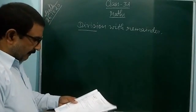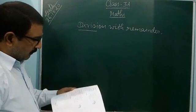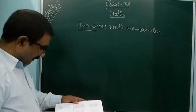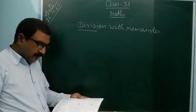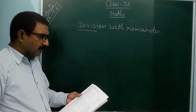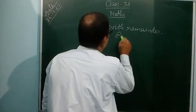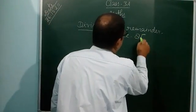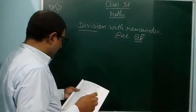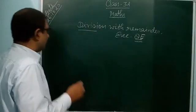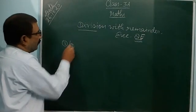Division with remainder is on page number 83. You can see some examples there, and after that many more examples are given on pages 83 and 84. The exercise starts from Exercise 8E. Exercise 8E — how to divide and check the answer. Let's look at question 1a.